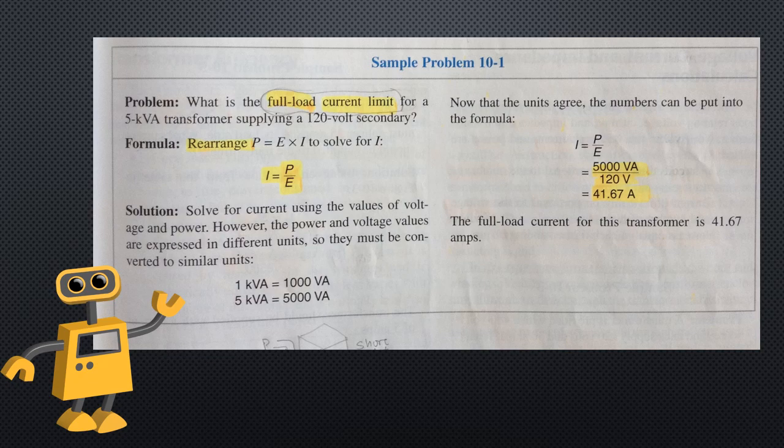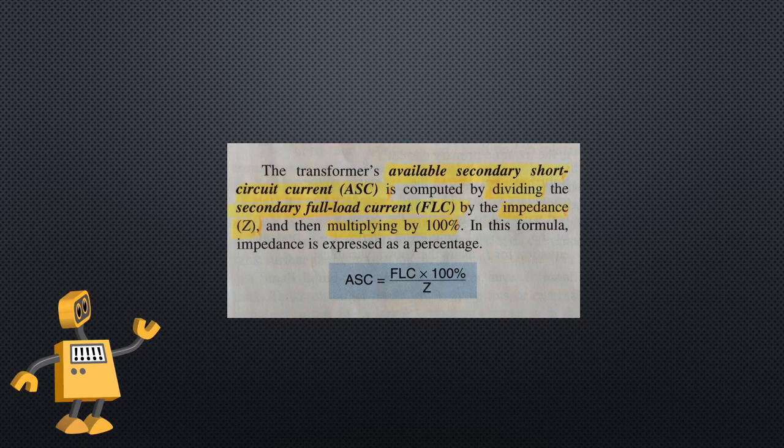Impedance. The impedance of a transformer is an indication of the short circuit current delivered when a direct short is placed across the secondary terminals. The impedance factor is listed as a percentage on the transformer nameplate and is used in sizing overcurrent protective devices. Take note of this—it is very important.